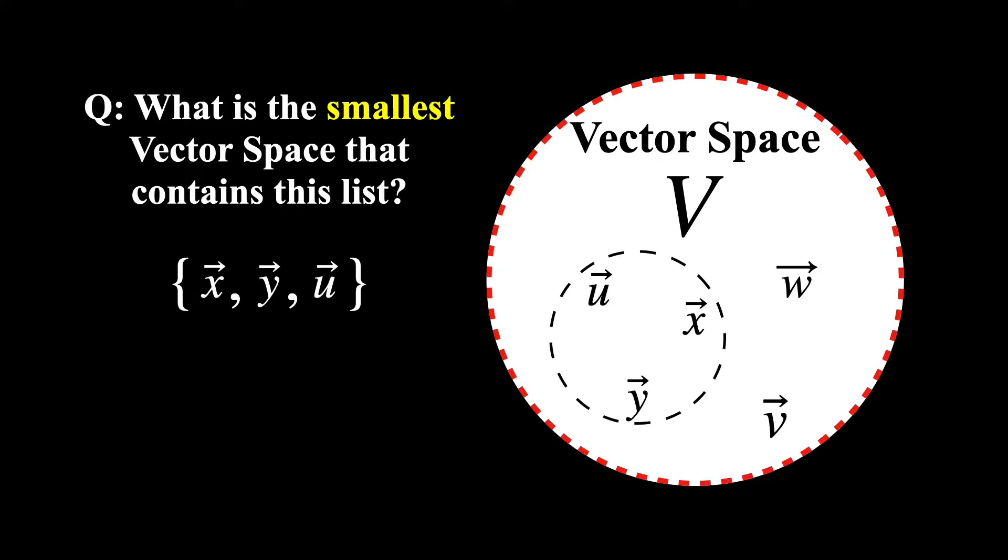The answer will ultimately depend on which vectors were chosen, but what will always be true is that the smallest vector space that can be formed is something called the span.